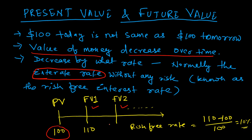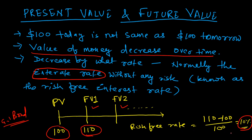To calculate the risk-free rate: let's say you invest your 100 dollars in a completely risk-free asset, such as a government bond, and you receive 110 dollars at period one. The risk-free rate in this case is (110 − 100) / 100 = 10%. So the risk-free rate is 10%.